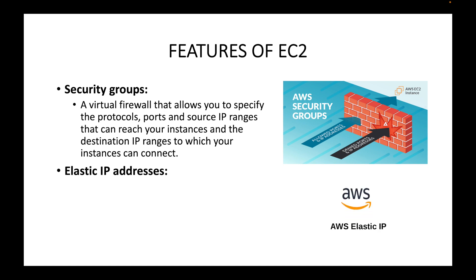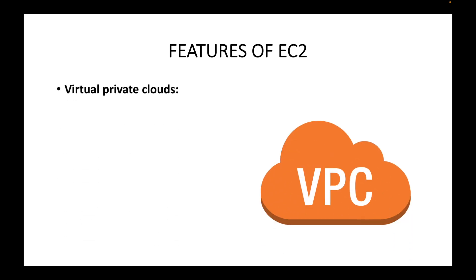Then we have elastic IPs. If you need a static IP address for your servers, you can use elastic IP addresses. This provides a static IPv4 address for dynamic cloud computing. The advantage of elastic IP is that the IP address will never change regardless of the status of your instance — whether you stop or restart the server, the IP address will remain the same and will not be lost. We will talk about this more in upcoming sessions.